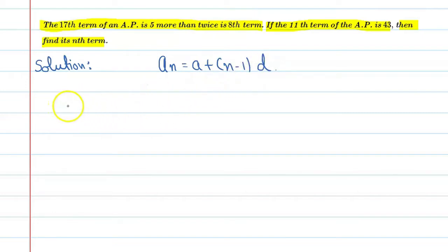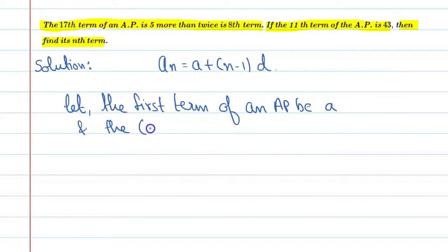First of all we will let the first term and the common difference. So let the first term of an AP be A and the common difference be D.